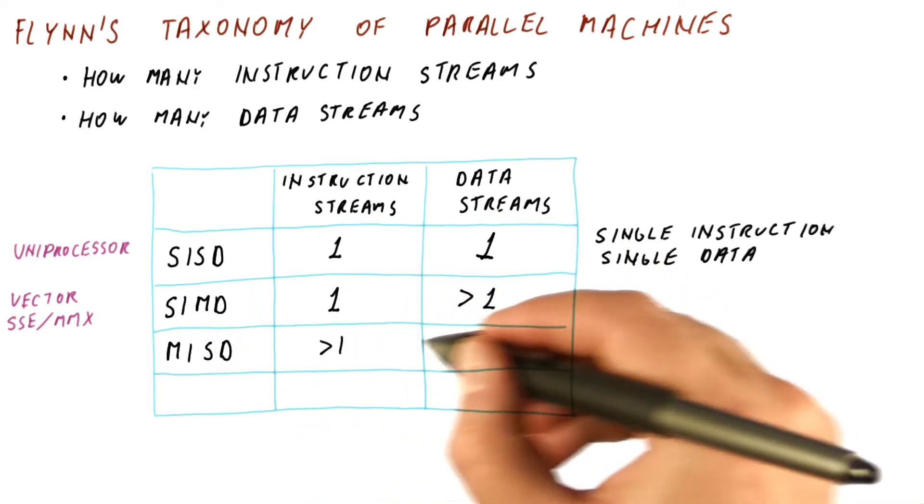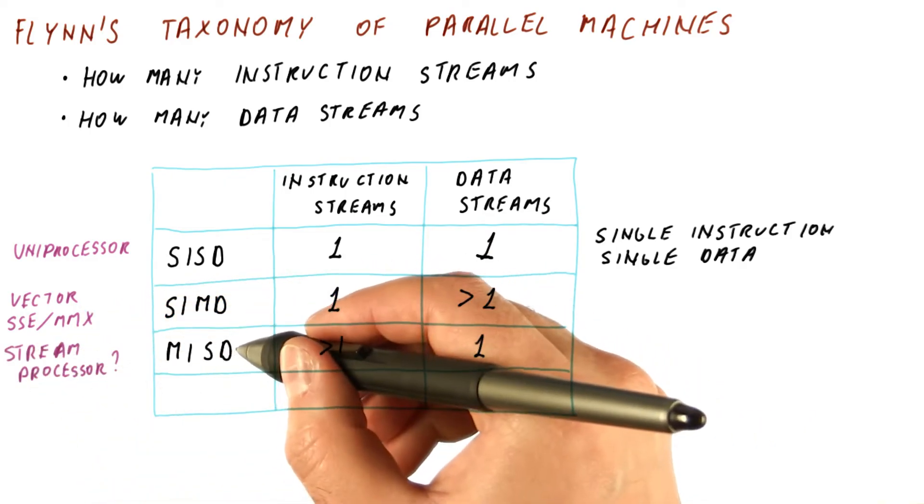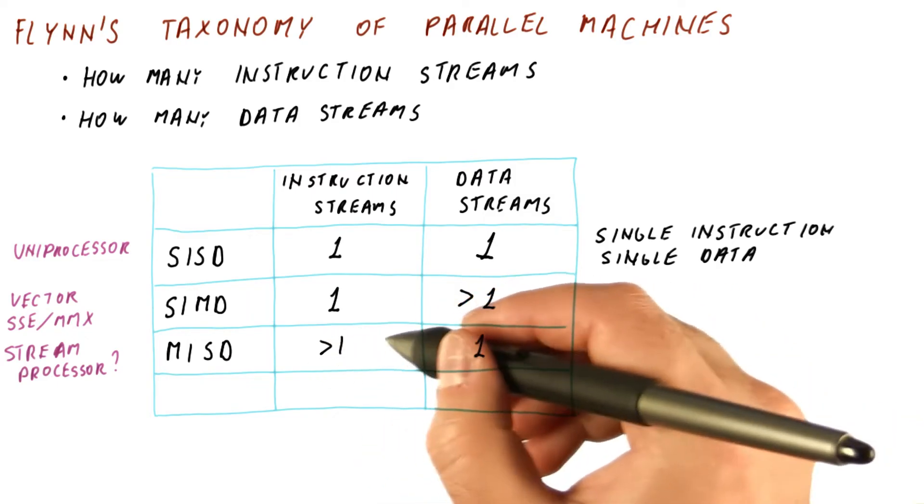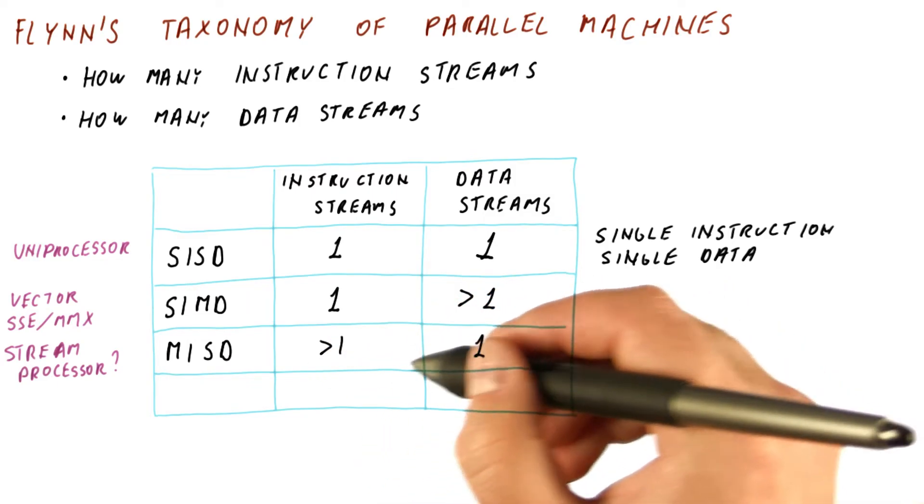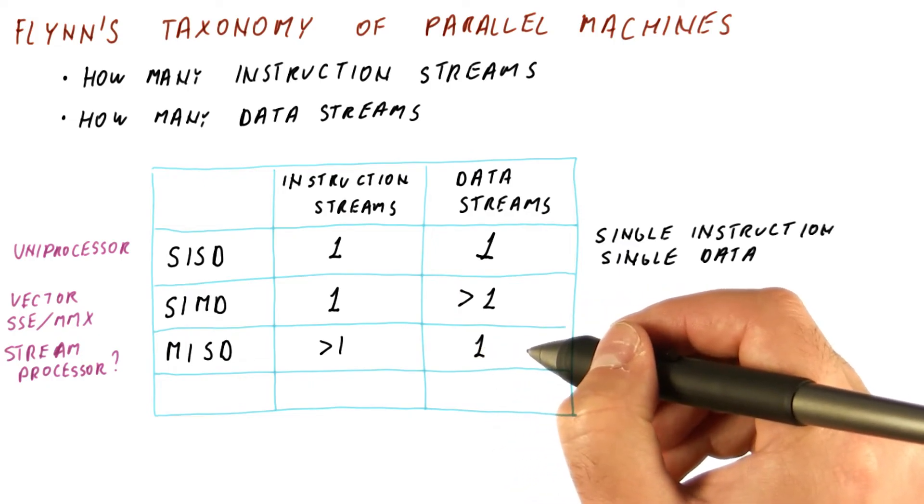The closest we get to this is something like a stream processor, where you have the first processor operating on, for example, the raw data from the camera. And then that data moves on to the next processor, which is going to process it some further, like find the edges or sharpen it.